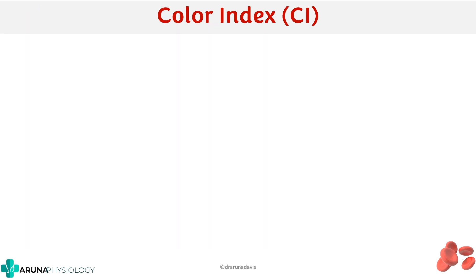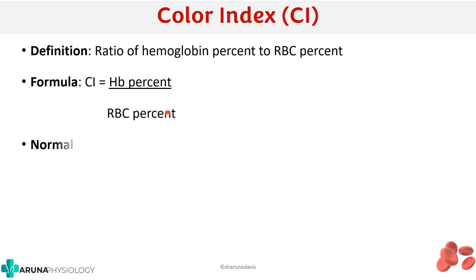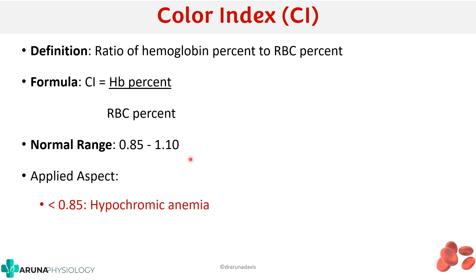We also have the color index, which is defined as the ratio of hemoglobin percent to RBC percent. The formula is hemoglobin percent divided by RBC percentage. The normal range is around 0.85 to 1.1. If it is less than 0.85, it is considered hypochromic anemia.